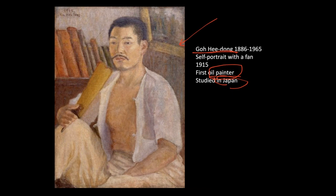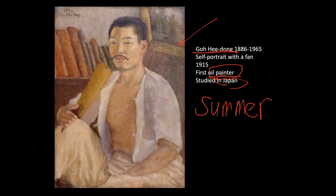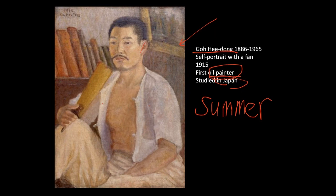If you look at Ko Hee-dong as a young man here — short hair — can you recognize what season it might be? Summer. How do you know? Because he's holding a hand fan, and his upper shirt is open. This is a transparent, gauzy shirt, which shows it's really hot summer, maybe August. He's in his room.